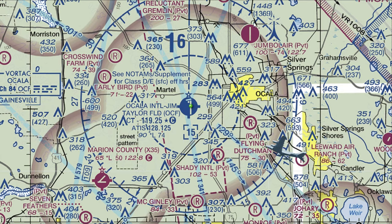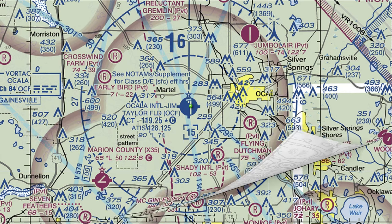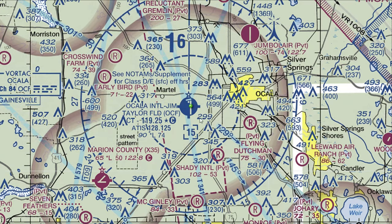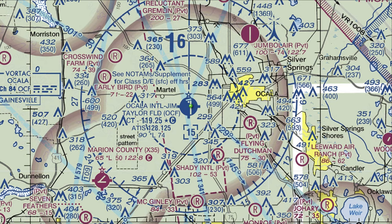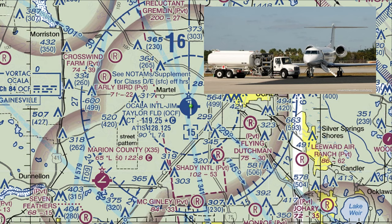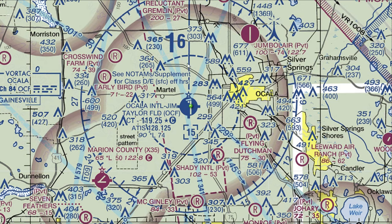Also notice these three little boxes coming off of this circle on the airport indicator. Those three little boxes mean this airport has fuel. So if you're running low on fuel, find an airport with those little boxes sticking out the sides and most likely they have fuel for you to purchase.